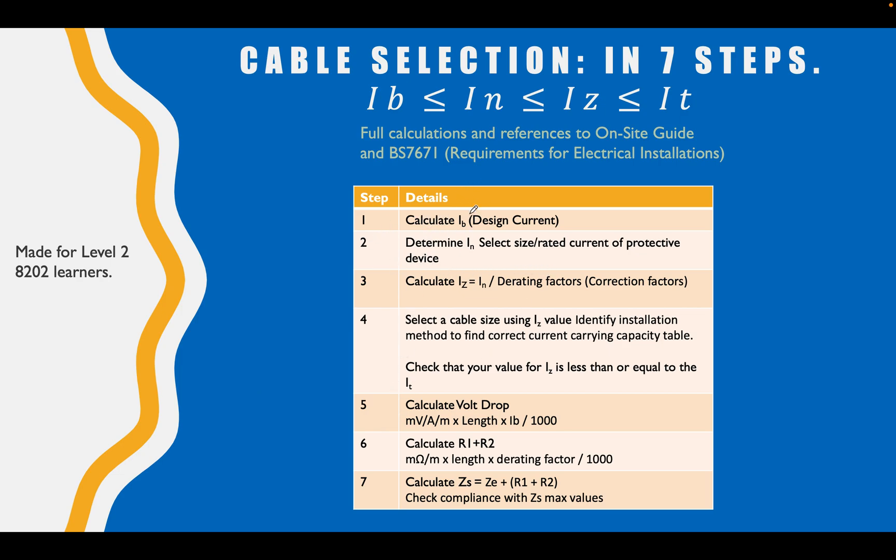Let's run through it now. We're going to go through one to seven: calculate the design current, determine the rated current of our protective device, calculate the Iz which is the current carrying capacity of the cable in the installed conditions, look at correction factors, select a cable using that value we get for our Iz, identify installation methods and go through current capacity tables, calculate volt drop, R1+R2 and Zs. We're going to do full calculations and references to on-site guide and the requirements for electrical installations, the big brown book.